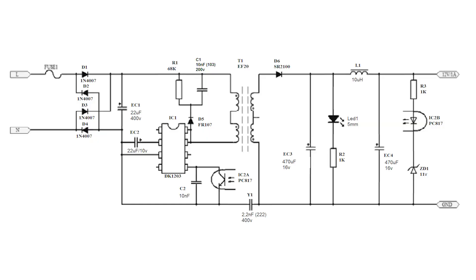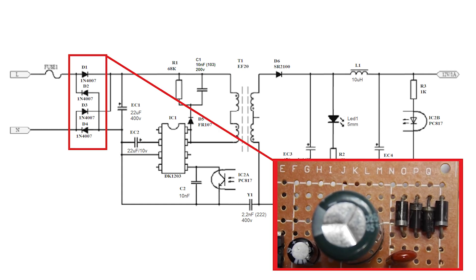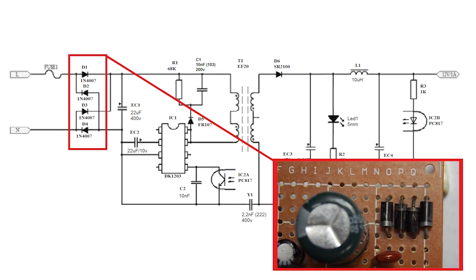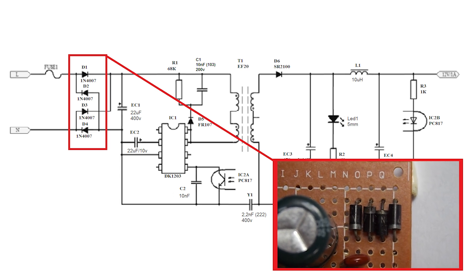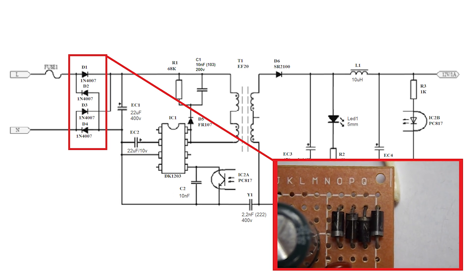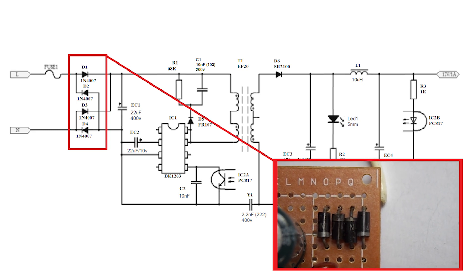I will show in more detail how each part looks from the circuit on the board. Fuse 1 is a fuse. I didn't install it. D1, D2, D3, D4 are 1N4007 rectifier diodes. These are the most common diodes in the world, but just in case, I will show them for beginners.